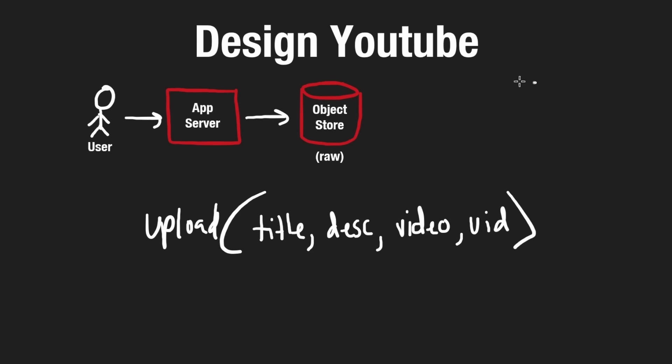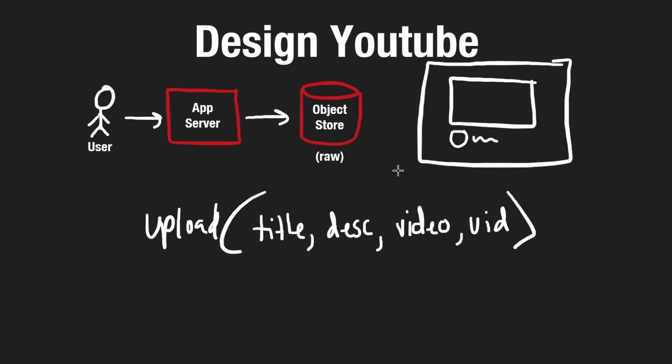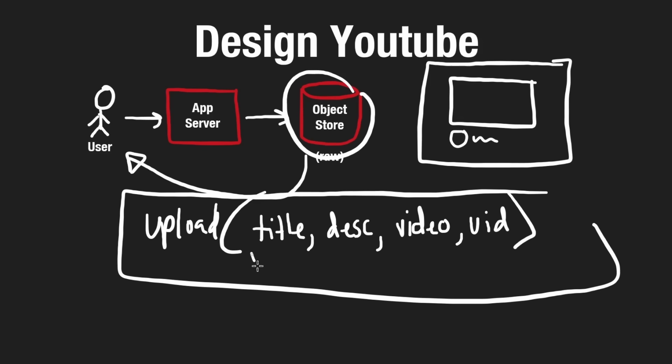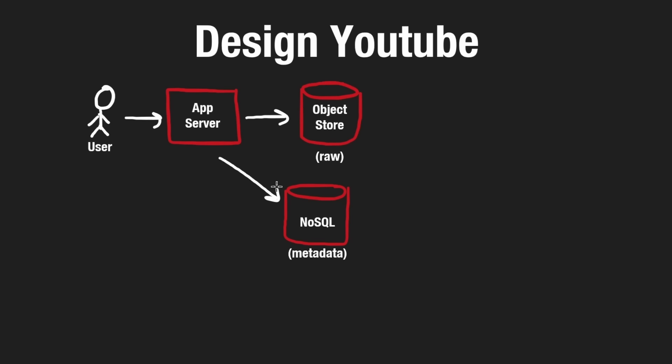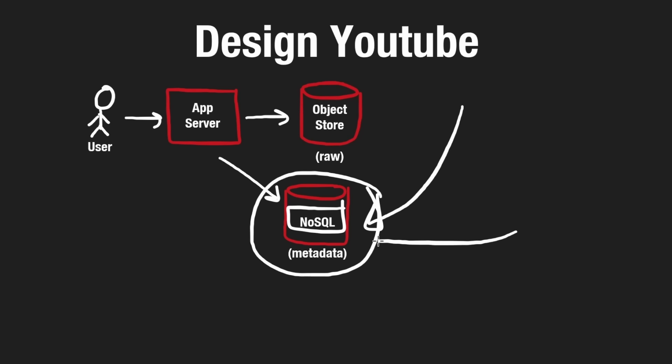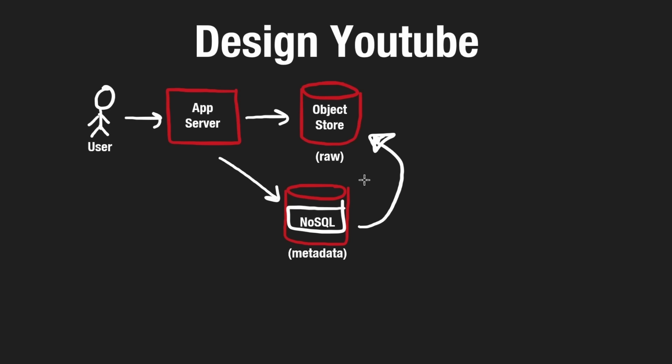Most importantly, we also want to associate every single video with a user. Every time you go on YouTube and watch a video, underneath there is usually the profile picture and username of the person who uploaded it. People are actually creating the videos — the content creators. So every time we want to show a video to a user, we're going to have to join that video with the user information and the video metadata. Every time we upload a video, we're also going to be storing metadata in a database. I'm choosing a NoSQL database because we're going to have so many videos uploaded and we'll need to read this metadata very frequently. In this database we can store a reference to the video file in the object store.